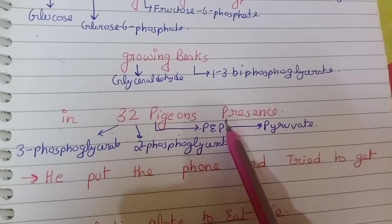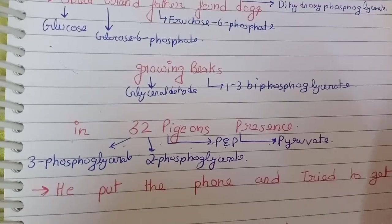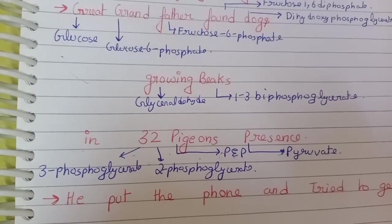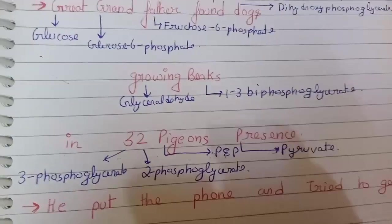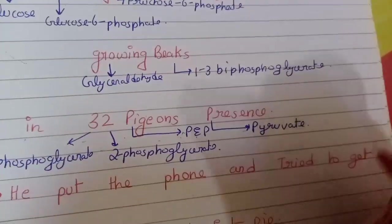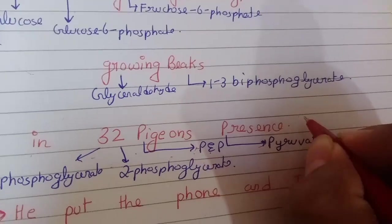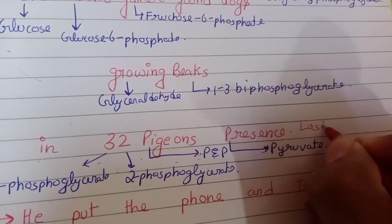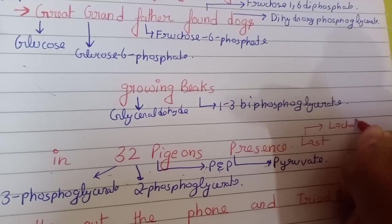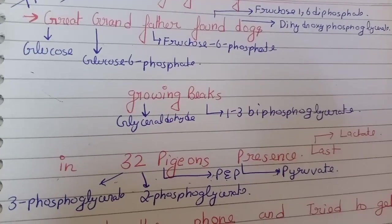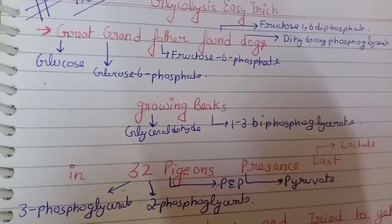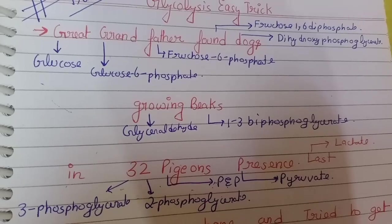And Prisons P is represented as pyruvate. In the case of aerobic respiration, the end product is pyruvate. For anaerobic glycolysis, you need to add 'last' to this trick — where L will represent lactate. So the trick becomes 'Great grandfather found dogs growing beaks in 32 pigeon prisons last,' covering the full anaerobic pathway.